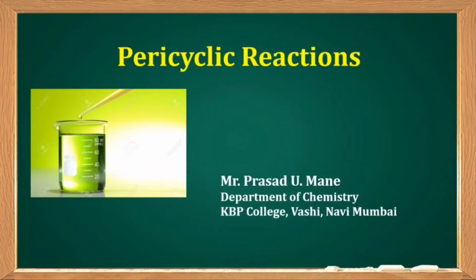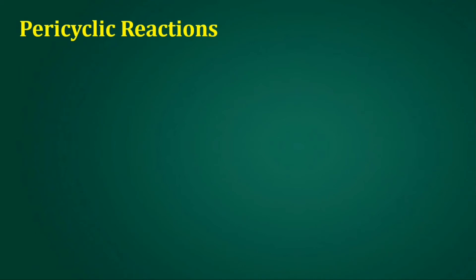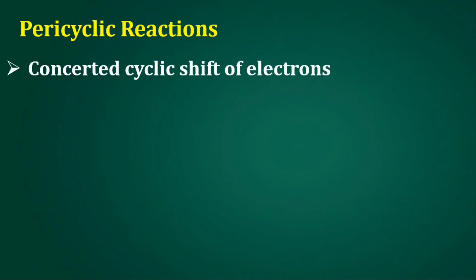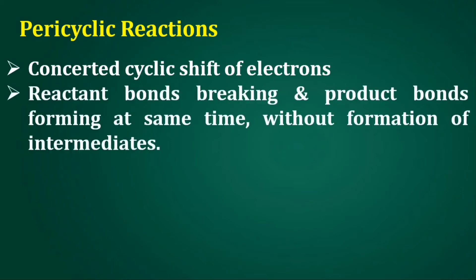Hello everyone. Today we are going to see the pericyclic reactions. Pericyclic reactions are nothing but the concerted cyclic shift of electrons — that means the shift of electrons takes place simultaneously. A very important point regarding pericyclic reactions is that reactant bond breaking and product bond forming takes place at the same time, and during this there is no intermediate formation. This is another key point regarding pericyclic reactions.